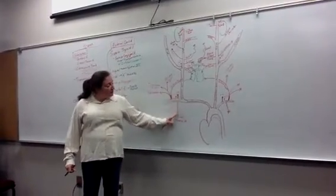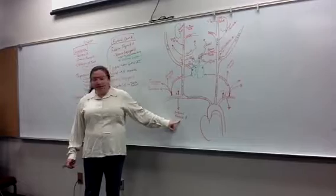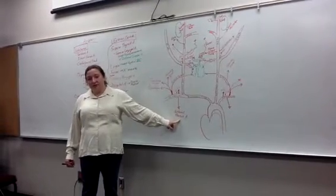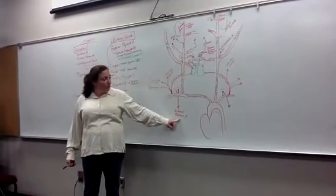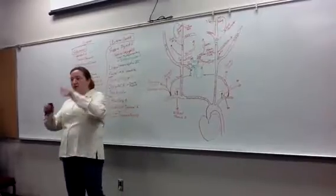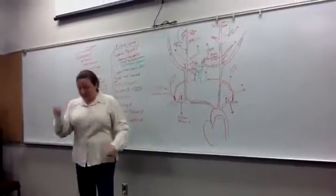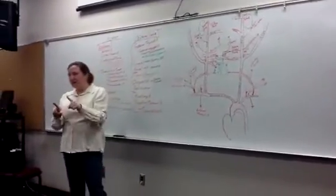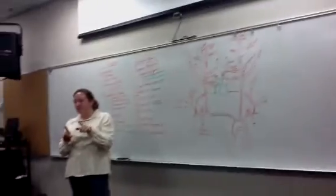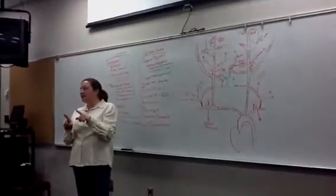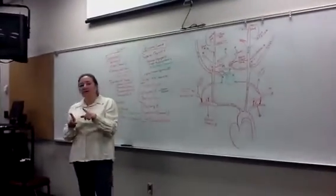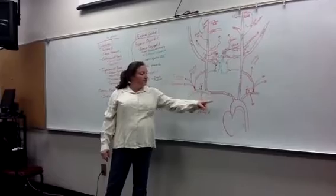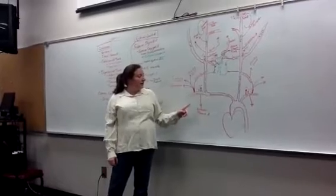Then we have the internal thoracic artery heading down on either side of the sternum, which you met in visceral. When we pulled off the sternum and looked underneath the transverse thoracic, you saw the internal thoracic artery. The internal thoracic artery is coming off the subclavian on each side.